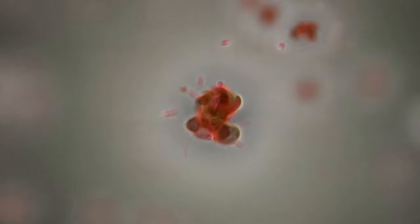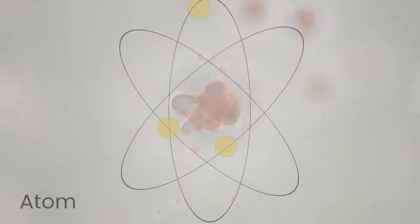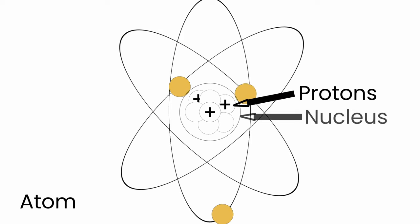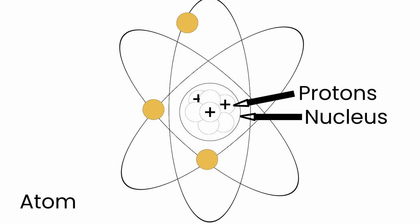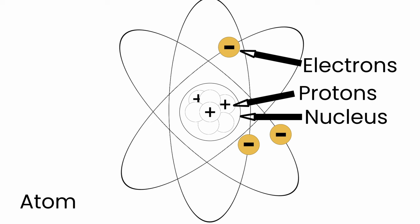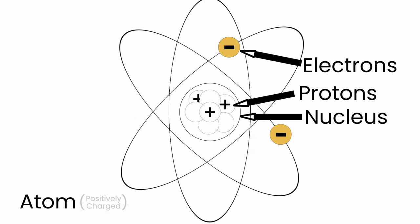Everything is made of atoms. Atoms are made of positively charged protons in their nucleus, and in a perfect world, an equal number of negatively charged electrons. But atoms can lose electrons or even gain extra ones. If an element loses electrons, it becomes positively charged. In this state, it is known as a cation.